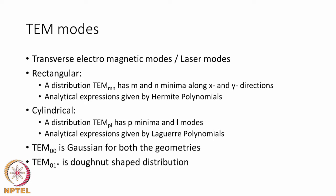Usually you have TEM followed by two numbers representing the number of minima along two different directions. These can also be modeled analytically using Hermite polynomials where m and n are parameters, providing analytical expressions for the heat source distribution for any combination of m and n in both rectangular and cylindrical modes. For cylindrical heat sources, Laguerre polynomials are used, and these are available in the open literature.